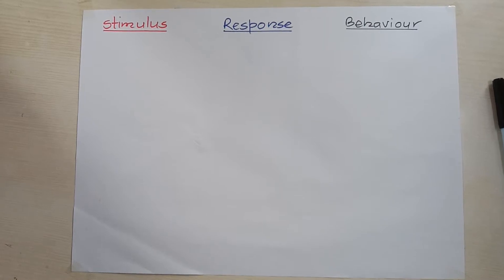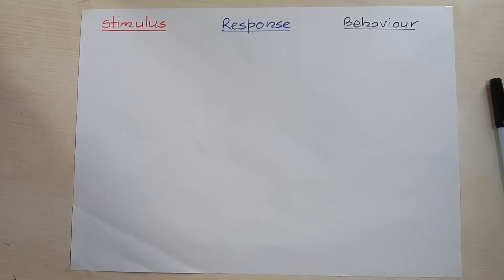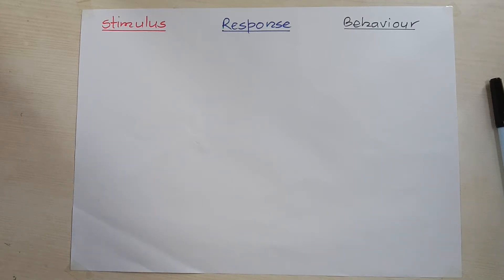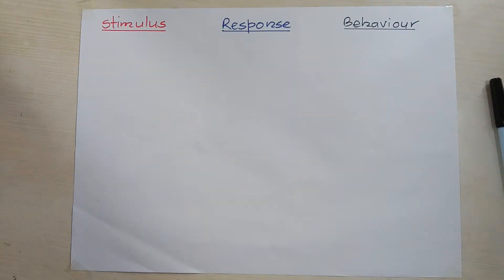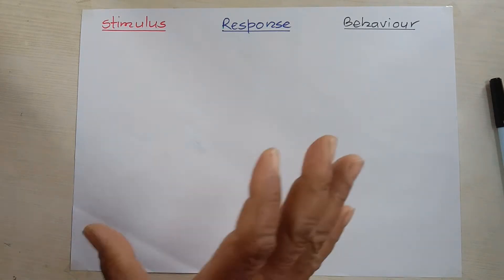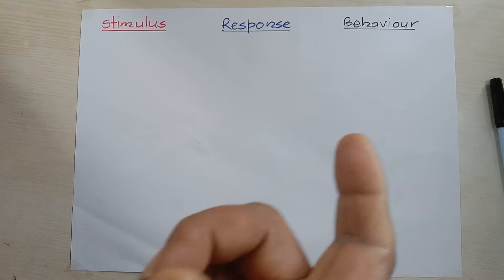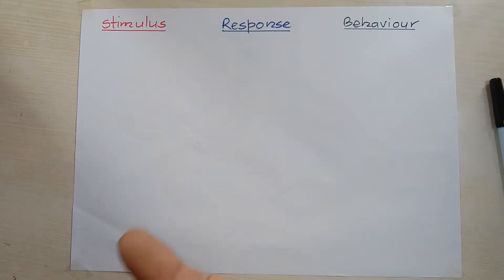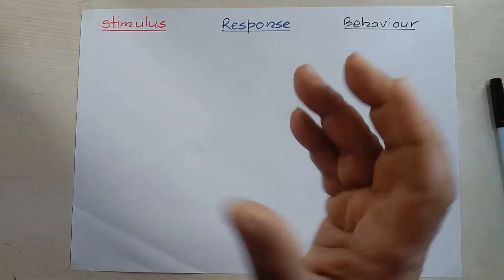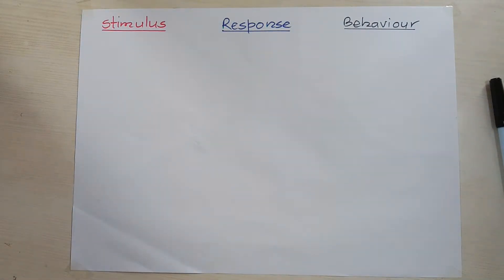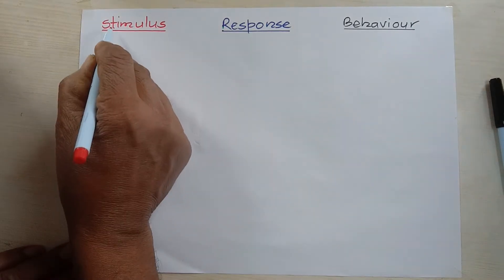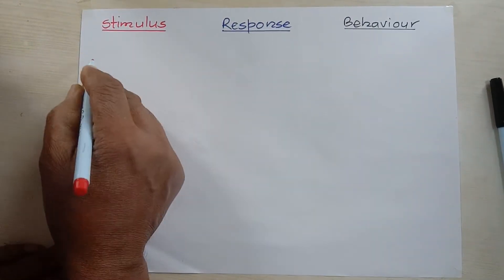Let's start with an example. If you are sitting in a room and someone enters into your room, you'll notice him — you will see him. This is related to stimulus. It means your environment has changed, and that change of environment due to which you look at him or notice him is called stimulus. That environmental change is called stimulus.